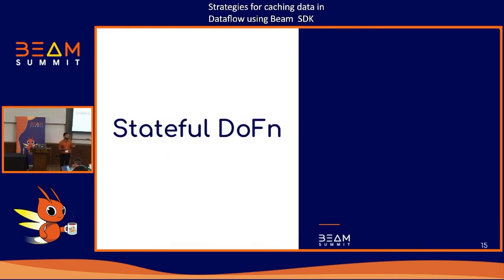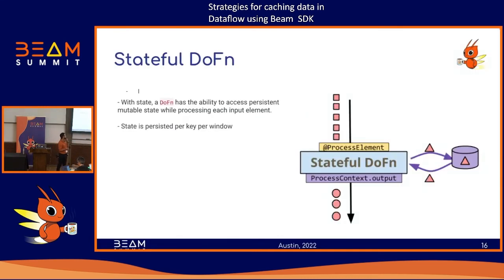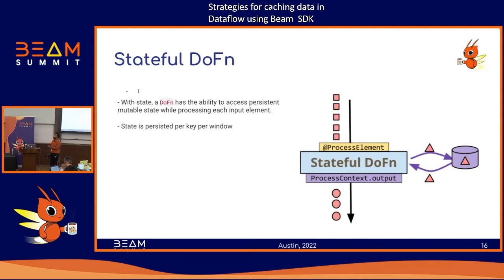The third option the Beam SDK provides is stateful DoFns. A regular DoFn is technically stateless — you don't maintain any state. But a stateful DoFn allows you to maintain a state that is per key per window, meaning for each key in a window you can maintain something reusable for other elements — effectively creating a cache.